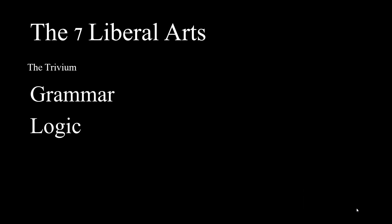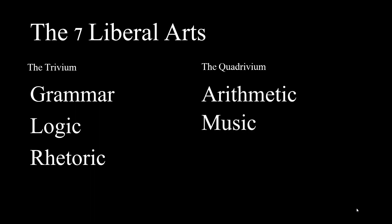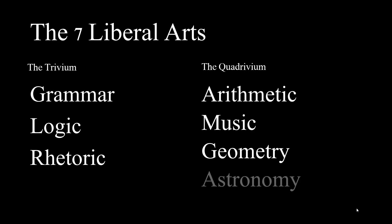The first three are grammar, logic, and rhetoric — these are collectively called the trivium. 'Tri' means three. The last four are arithmetic, music, geometry, and astronomy — these form the quadrivium. Together, these seven make up the seven liberal arts, which is what liberal arts educational institutions were initially set up to teach.